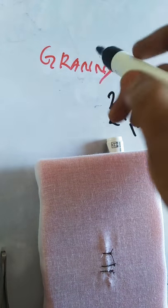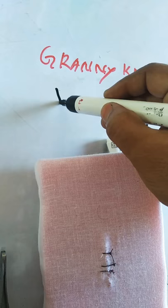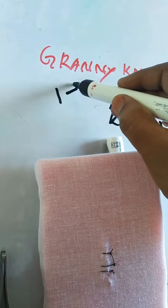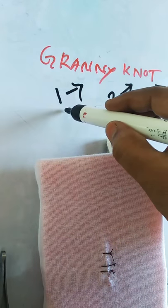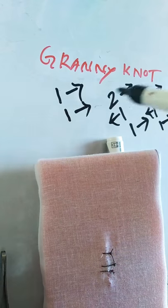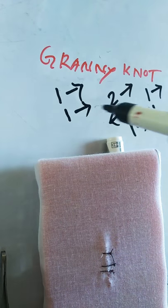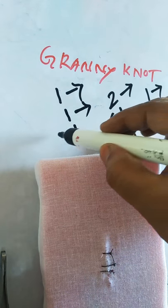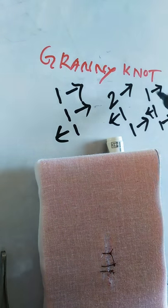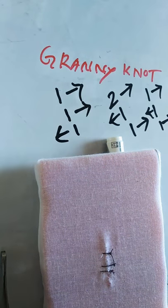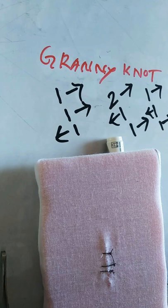In the granny knot: the first tie is one throw in the clockwise direction, the second tie is also one throw in the clockwise direction, and the third tie is one throw in the anti-clockwise direction. If you remember this, you can write it easily. This is all about the suture knot tying types.